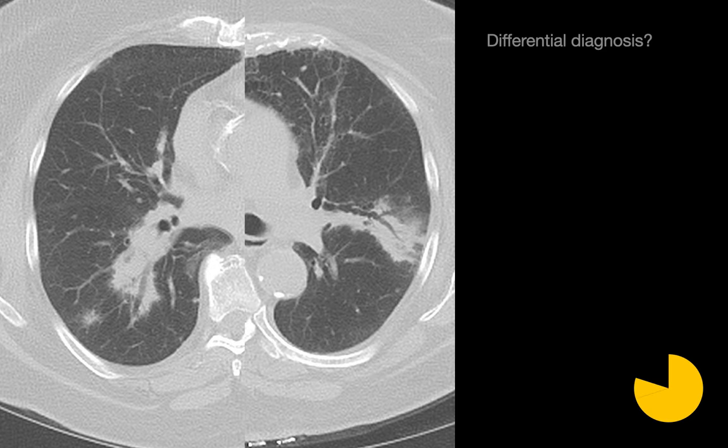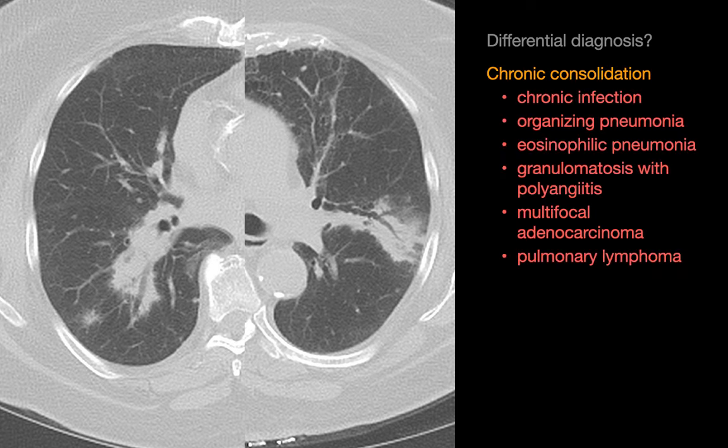What is your differential diagnosis for this case? The imaging finding is a region of peribronchovascular consolidation through which air bronchograms course. There is a subtle amount of local retraction and architectural distortion — a beaded appearance of the air bronchograms — suggesting a chronic rather than acute time course. The differential diagnosis for chronic consolidation includes chronic lung infection, organizing pneumonia, and GPA as the most common items.